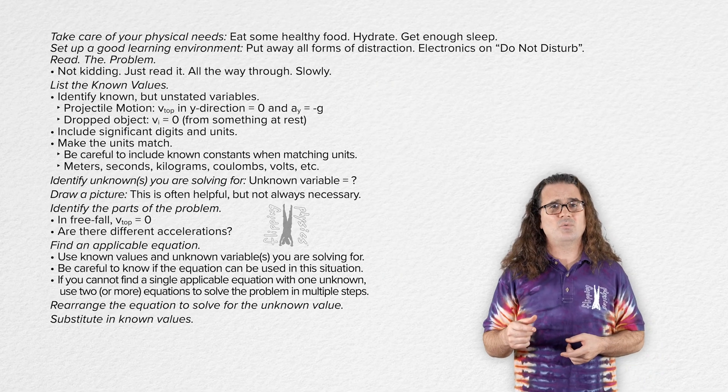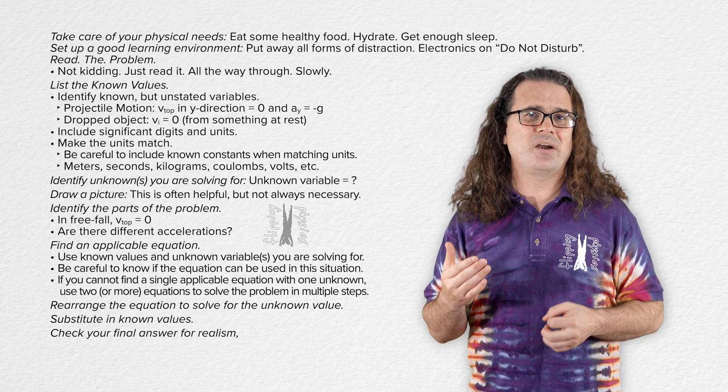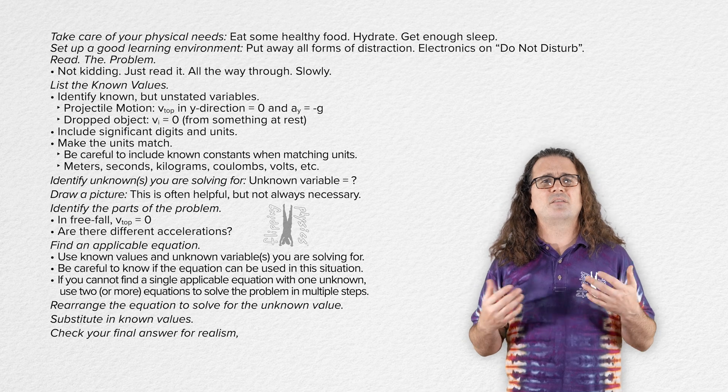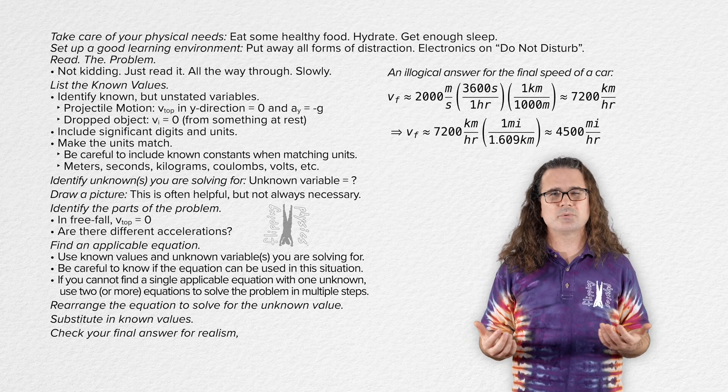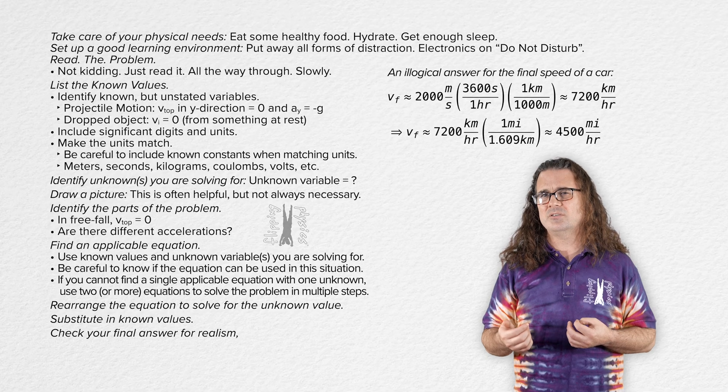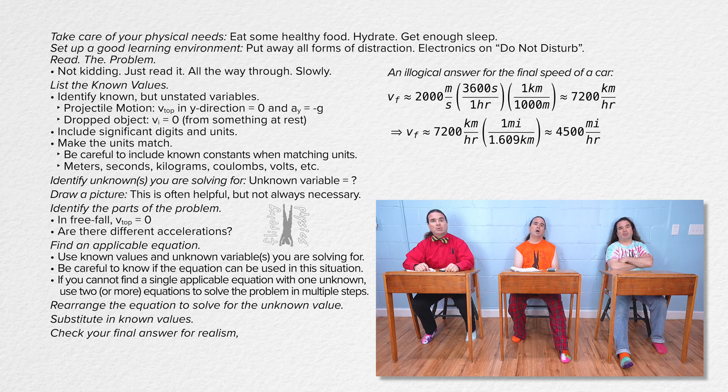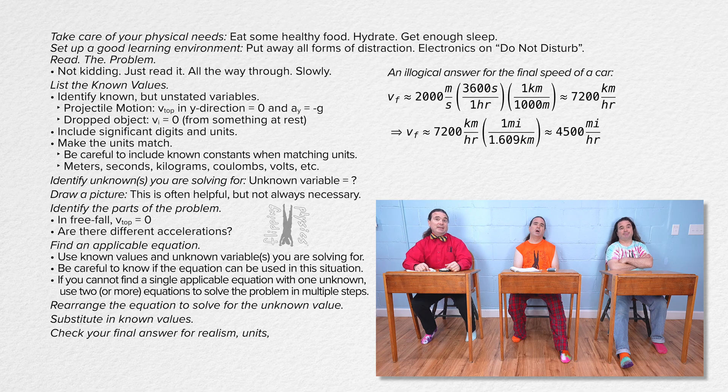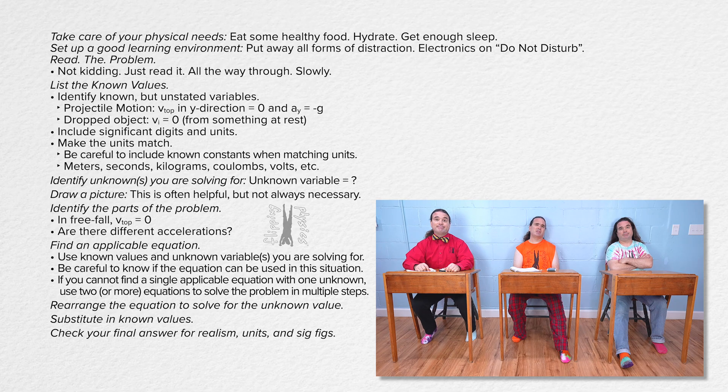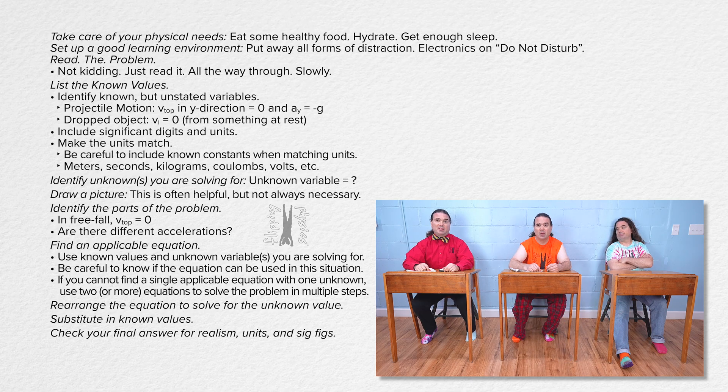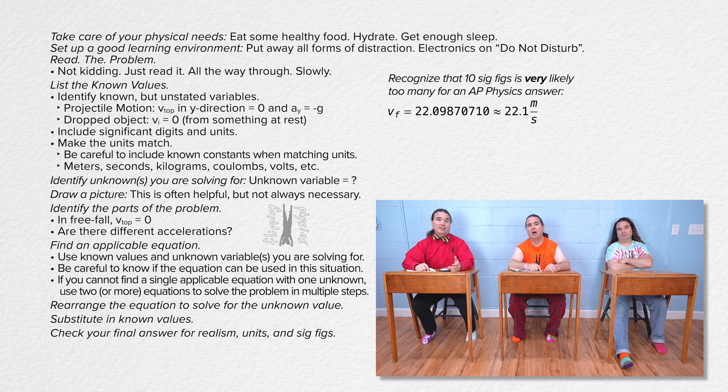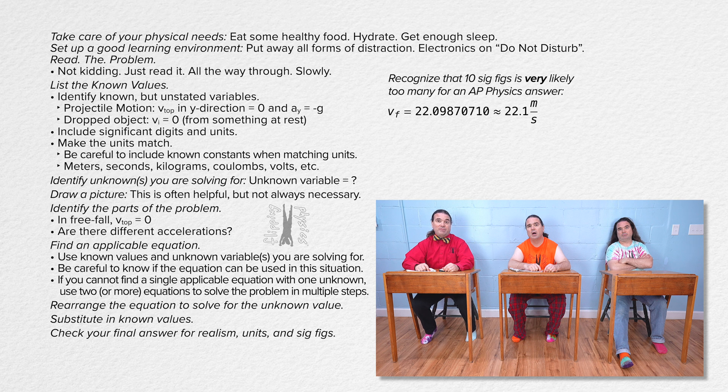Also, it is a good idea when you get to a final number answer, to check to see if that number answer makes sense. For example, if you get that the final speed of the car is 2000 meters per second, you should be able to recognize that cars are not able to move that quickly. And you should make sure your number answer has units on it. And you should make sure your number has the correct number of significant figures. True, but the AP physics exams do not really concern themselves with significant digits. True, but we should still be close. The final speed of a ball is probably not 22.09870710 meters per second. I mean, it is highly unlikely that every known value had at least 10 significant digits, right? Valid.